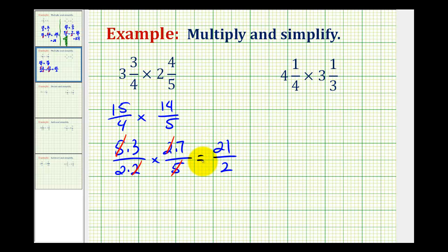So if we're allowed to leave our answer as an improper fraction, we would be done. But let's go ahead and review how to convert this back to a mixed number. The fraction bar means division, so this is the same as twenty-one divided by two.